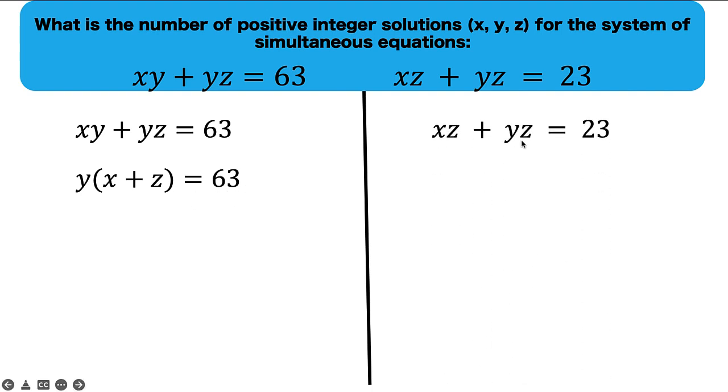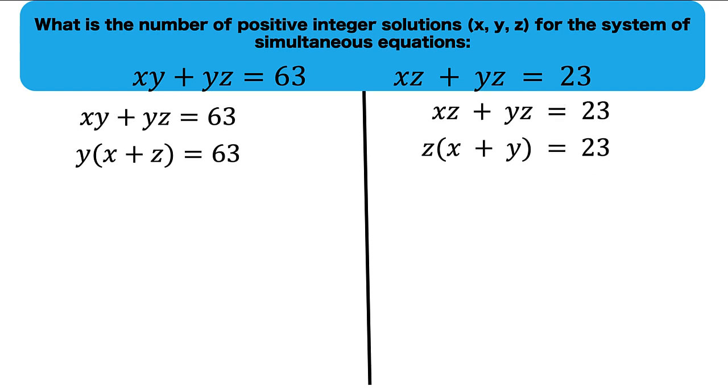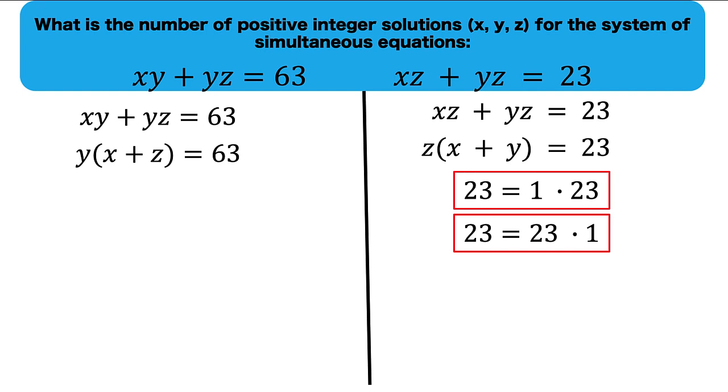Let's go to the second equation. There is a common factor z, so let's factor out z to arrive at z times the quantity x plus y equals 23. Now notice that 23 is a prime number. Its factors are 1 and 23. It's either we write it as 1 times 23 or 23 times 1 by commutative property of multiplication.